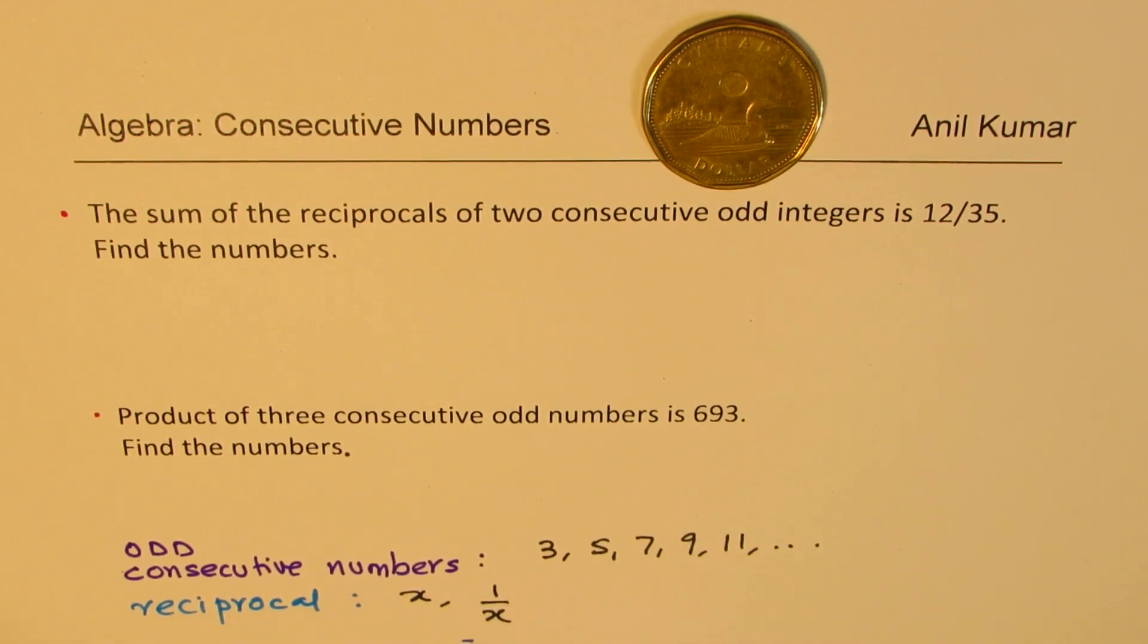For example, if you're talking about these odd numbers, the reciprocal numbers will be 1 over 3, 1 over 5, 1 over 7 and so on. You get the idea. So these are reciprocals of the consecutive numbers, odd consecutive numbers. Perfect.